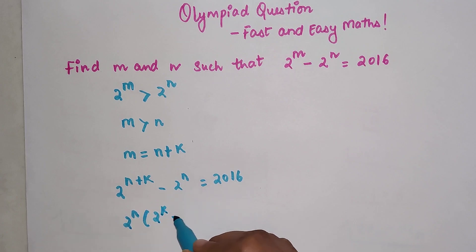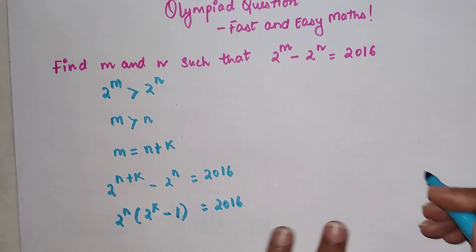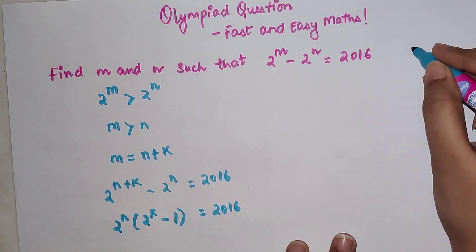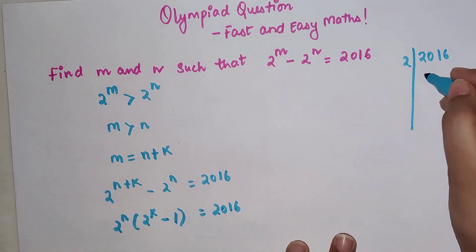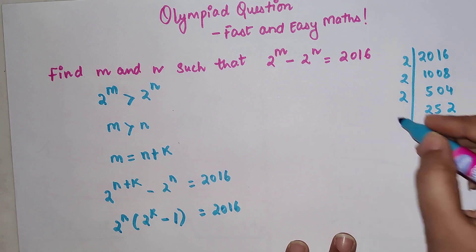So now this is the part where we will start factorizing 2016. 2 goes into 2016 gets you 1008, 2 goes into 1008 gets you 504, 2 goes into 504 gets you 252.